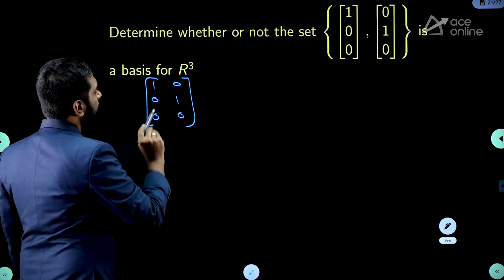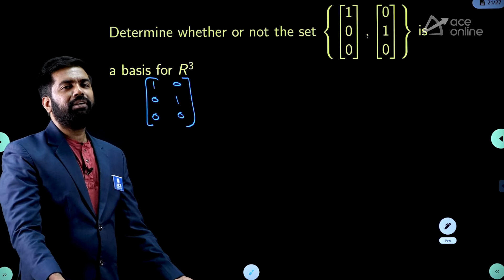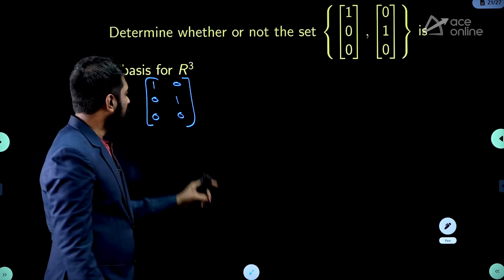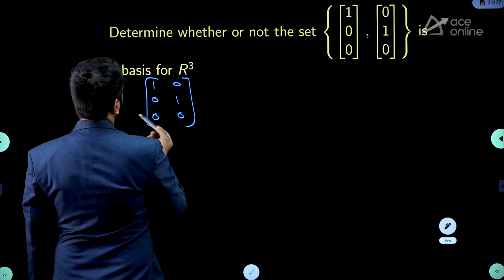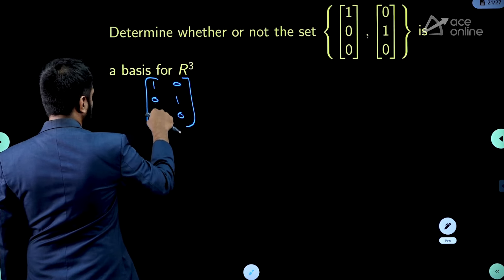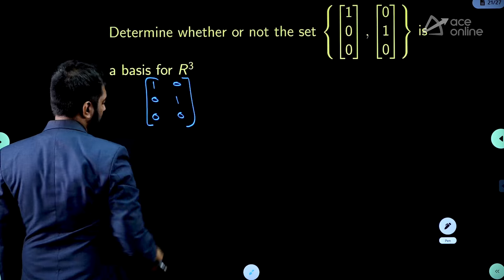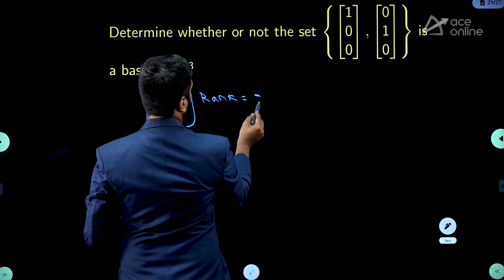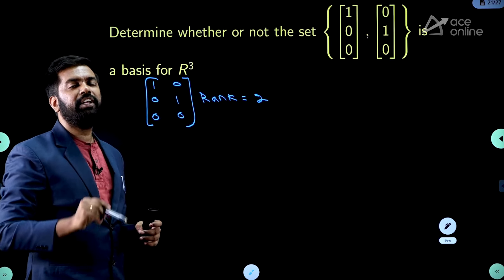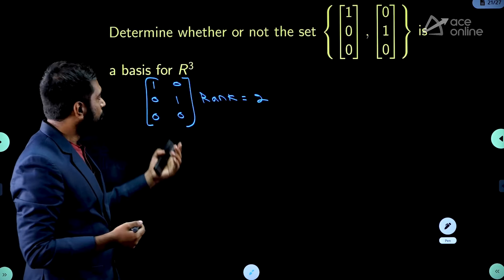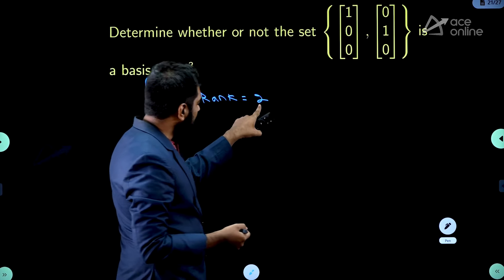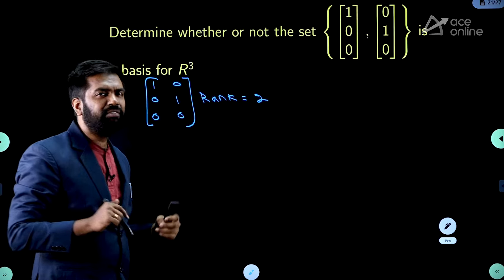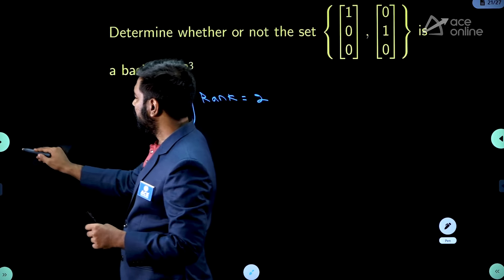I want to know whether these two vectors are linearly independent. The rank of the matrix [1,0,0; 0,1,0] is 2, since it is already in row echelon form. Rank indicates the number of linearly independent columns or rows. There are only two columns and the rank is also 2. Therefore the given columns are independent — the given vectors are linearly independent.